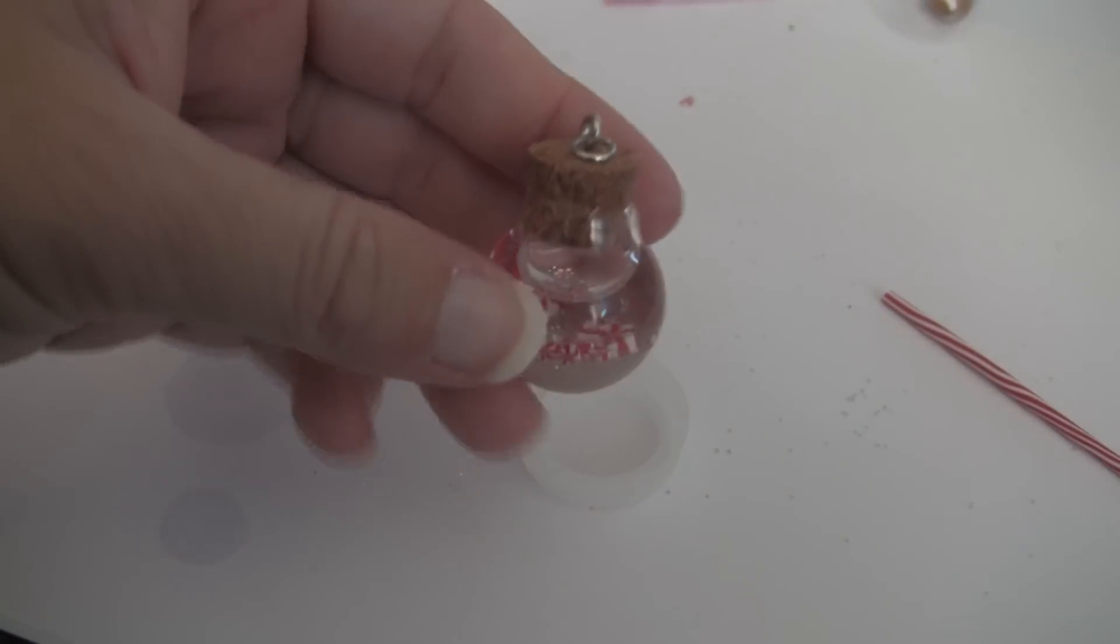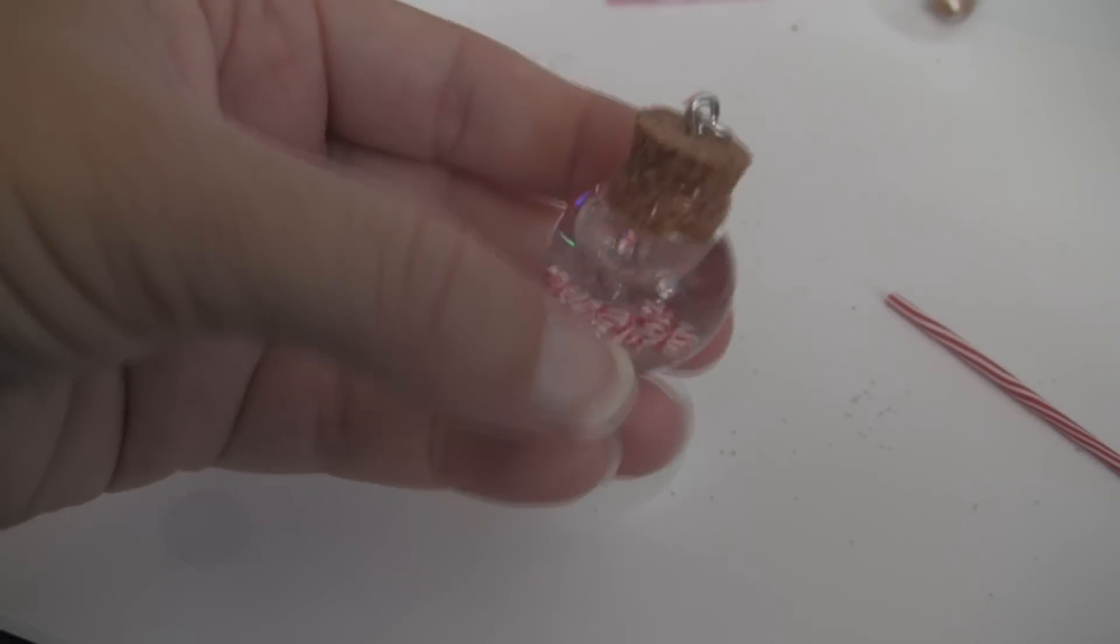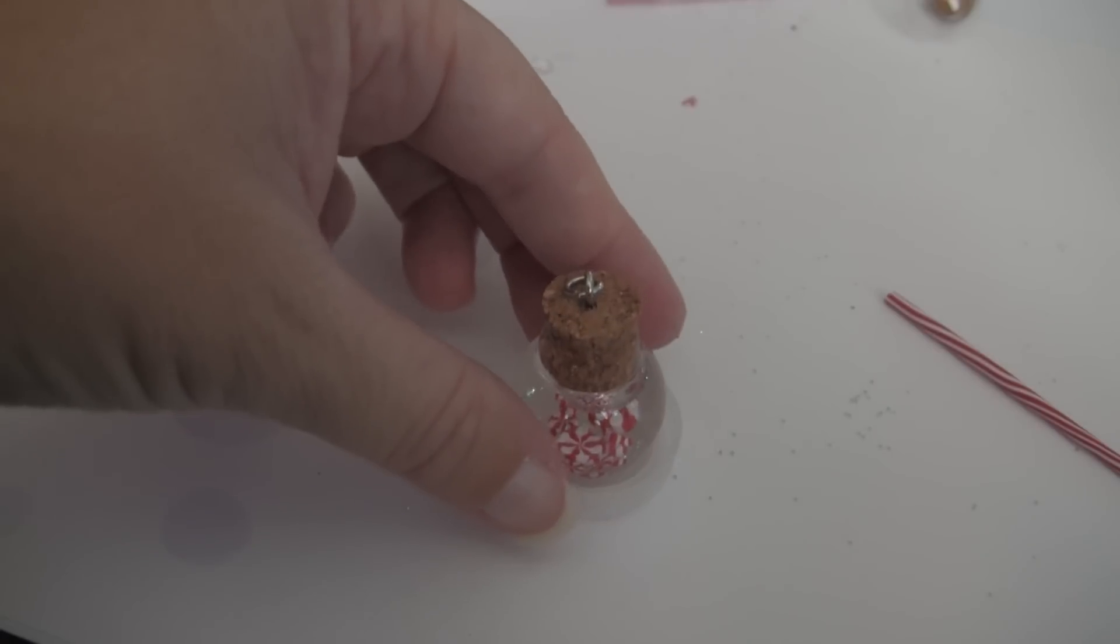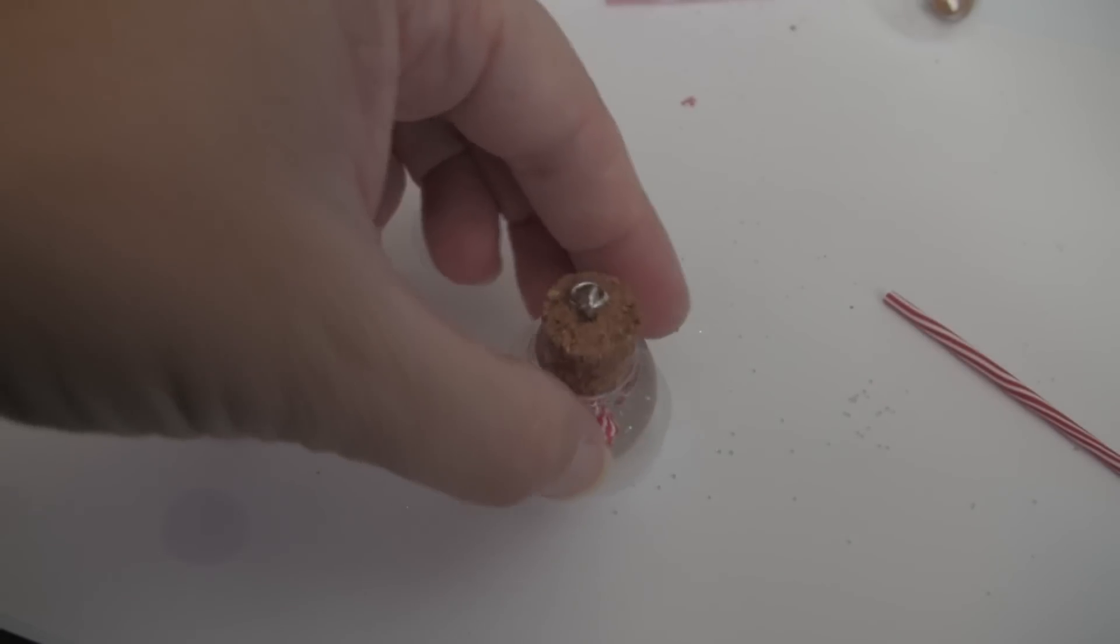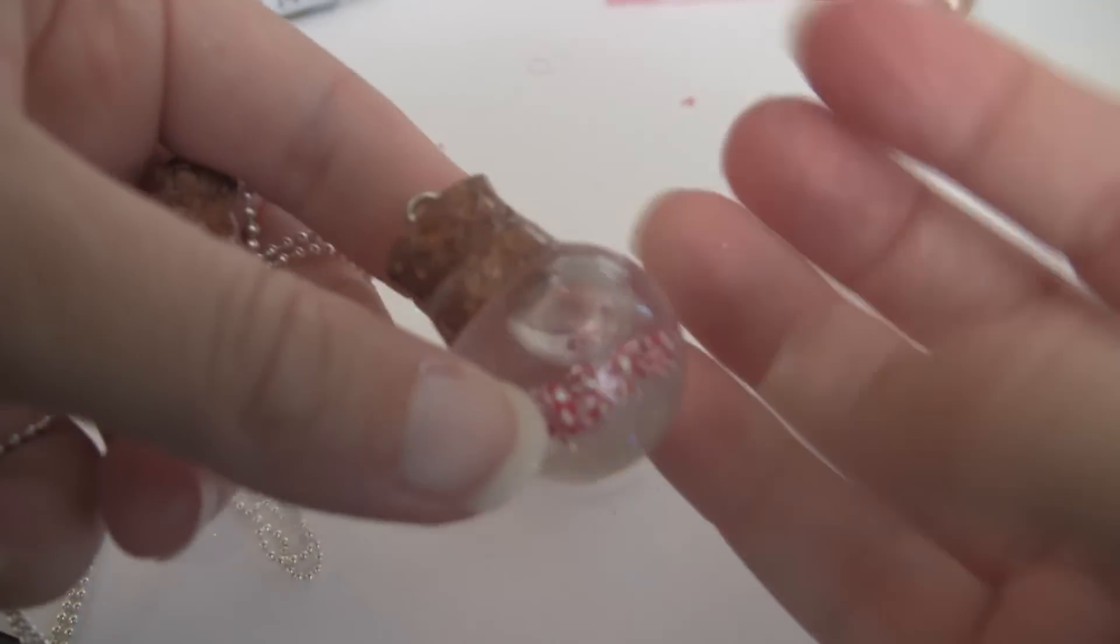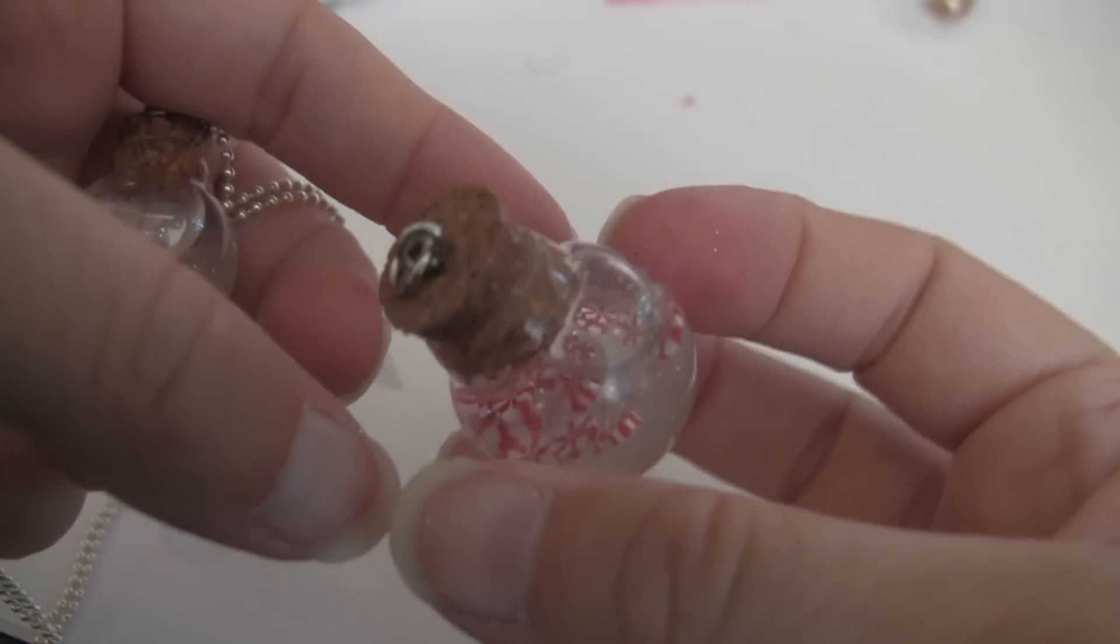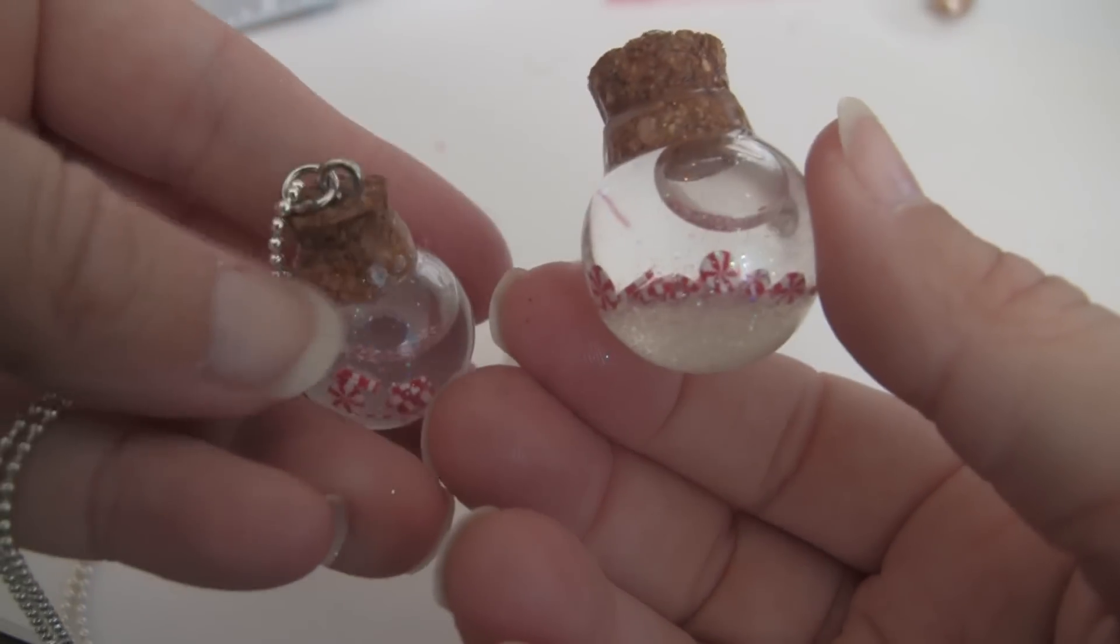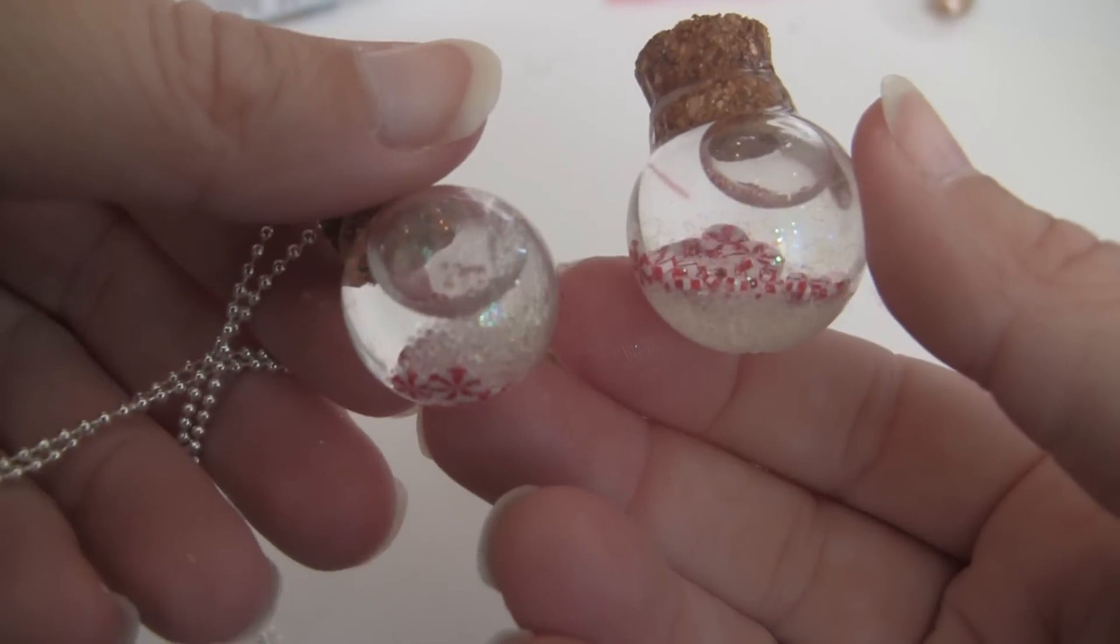And then there we go. So from here I'm going to let it dry just like that so it remains upright. The jewelry glue usually takes about 24 hours to dry. So just make sure that you know that.